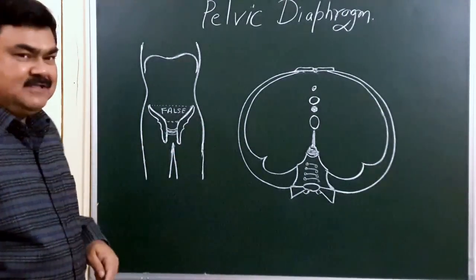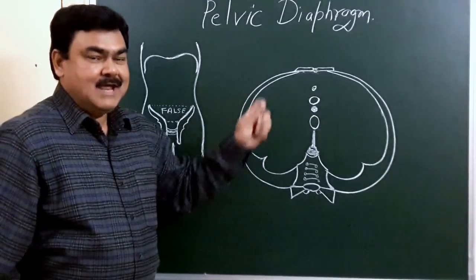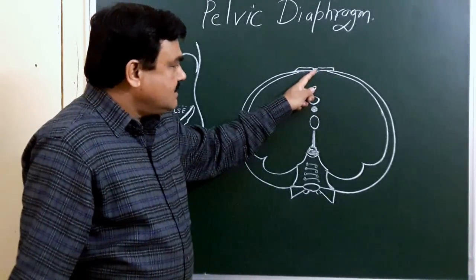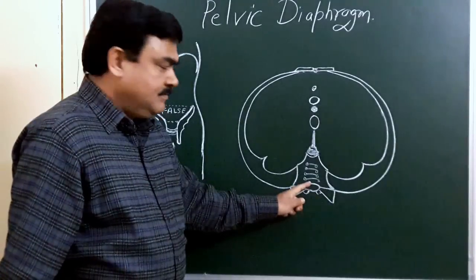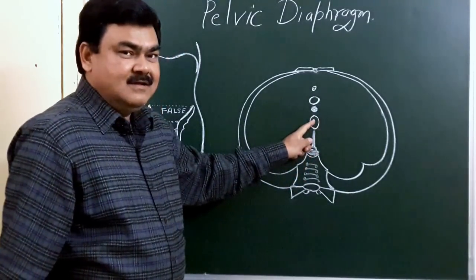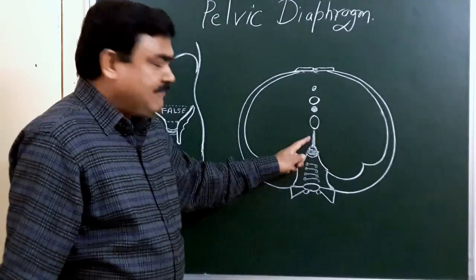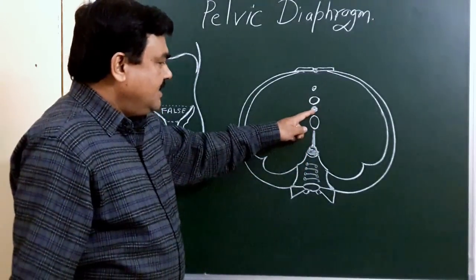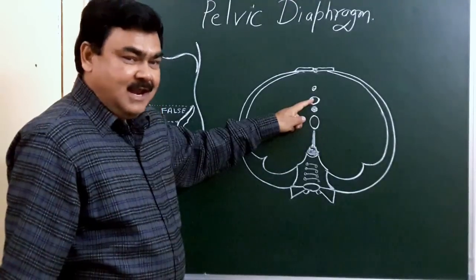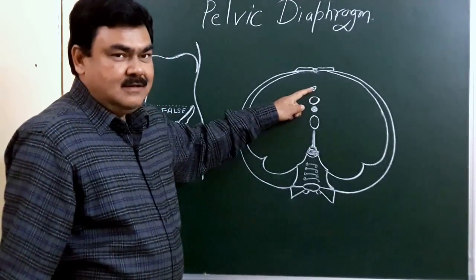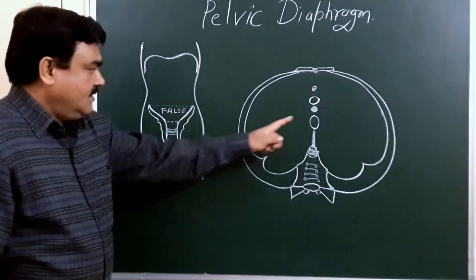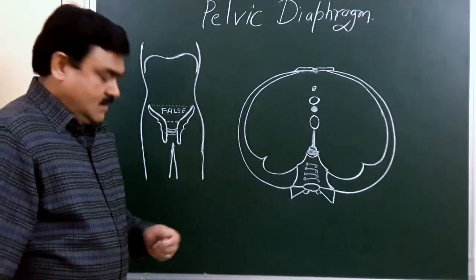If you look at a transverse section at this level, you will find a diagram like this. This is the anterior part, here is the pubic bone, this is the pubic symphysis. Posteriorly there is the obturator fascia, and here is the sacrum and coccyx. This is the anorectal junction, this is the anococcygeal raphe or ligament, and here is the perineal body. This is the vagina in females and the urethra in males and females. These structures pierce the pelvic diaphragm.